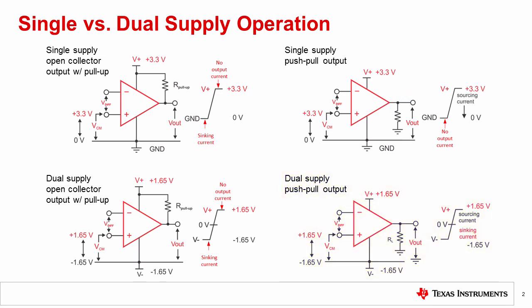Finally, on the lower right, we have the push-pull comparator configured for dual supply. In this case, the comparator must source current when it drives the output high to plus 1.65 volts, and it must sync current when it drives the output low to minus 1.65 volts.